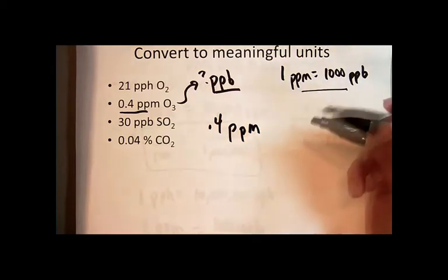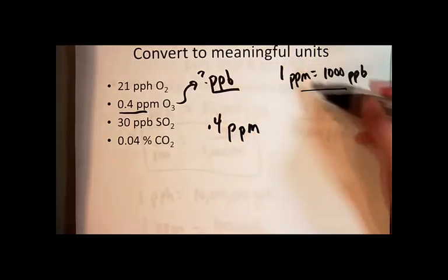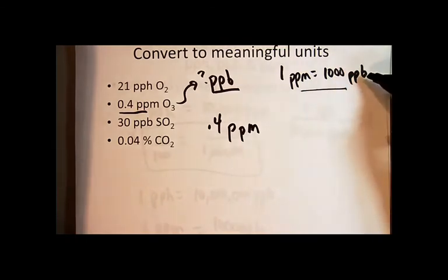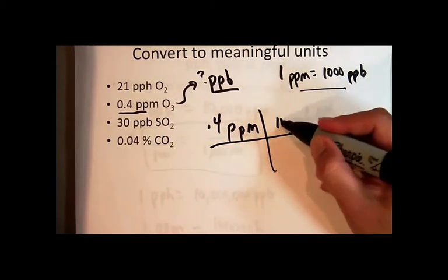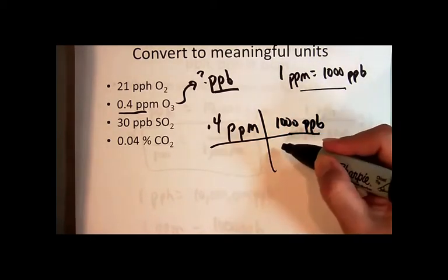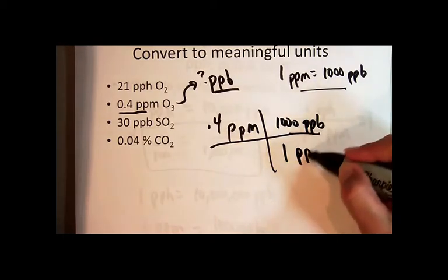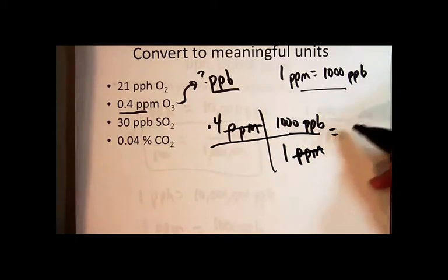And I'm going to multiply it - let me see, I want the parts per million to cancel, so I'm going to make my unit factor to be a thousand parts per billion over one part per million. The part per million unit cancels and that ends up 0.4 times the 1,000 is 400 parts per billion.